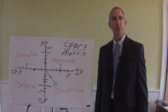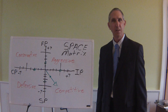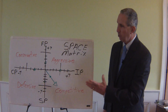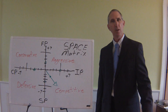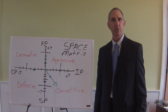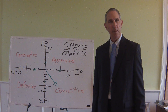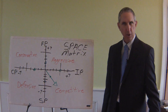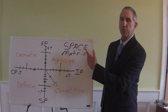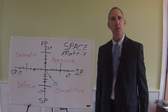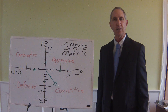The topic today is the SPACE matrix. It appears in chapter six. It's one of five matching tools that businesses are widely using to help formulate alternative strategies, coupled with the BCG matrix, the IE, and the Grand matrix. SPACE stands for Strategic Position and Action Evaluation. Notice there are four axes here.